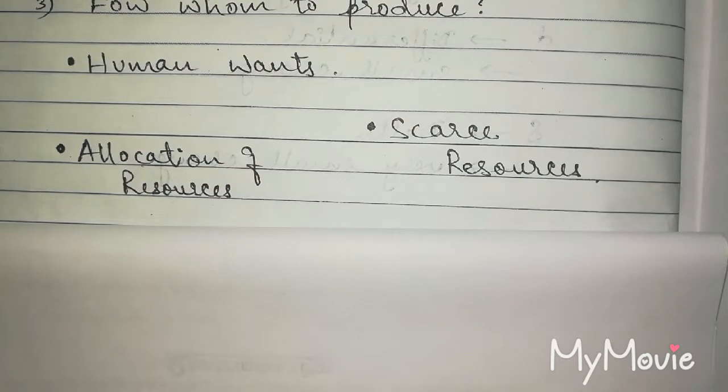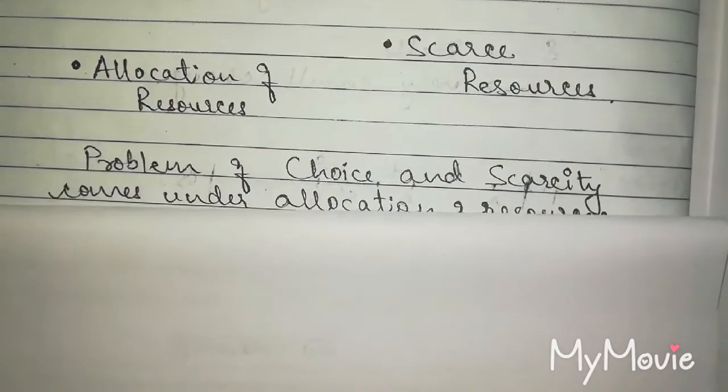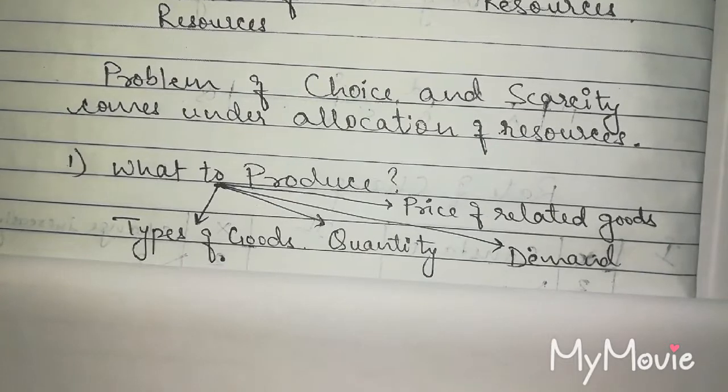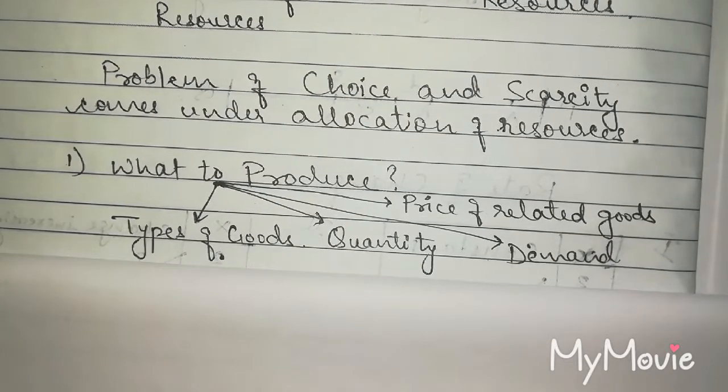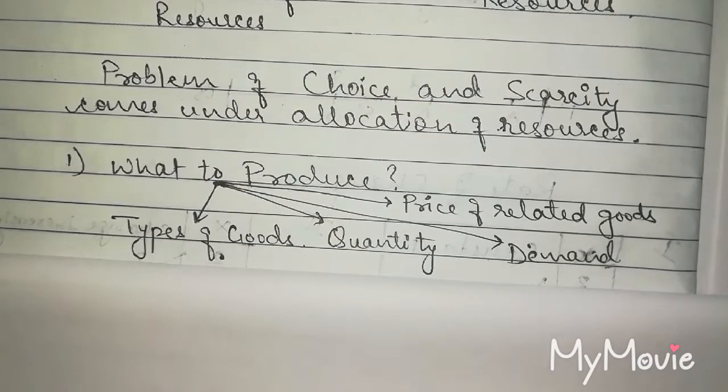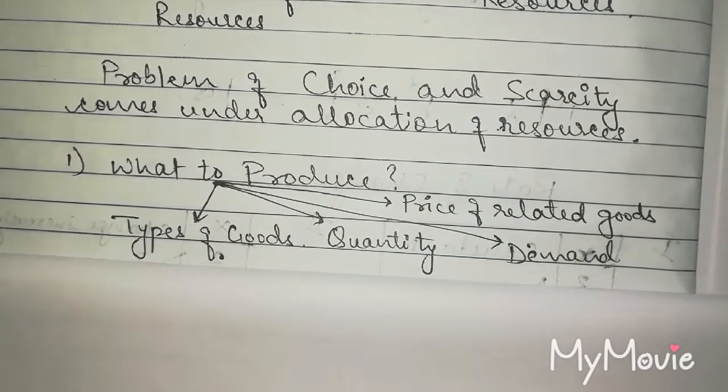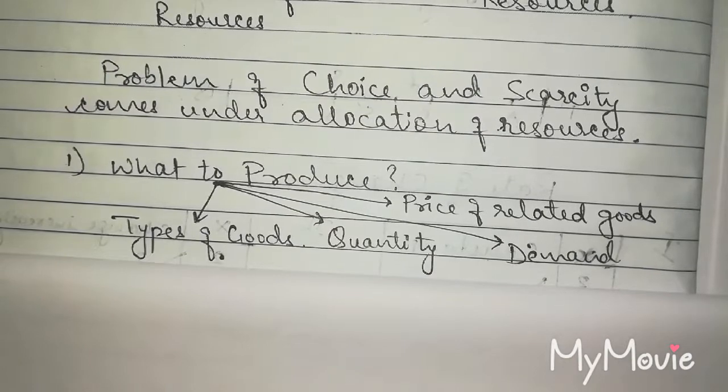What to produce? The first question will only be solved when we understand what are the resources around us and what is the desire for that resource and product. Now, how do we solve them? The factors, the variables, the values of what to produce - that means the price of related goods, demand, quantity of that goods, types of goods.